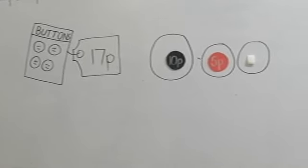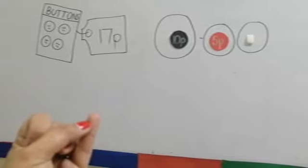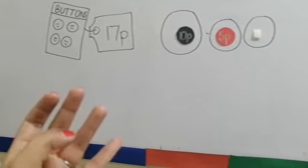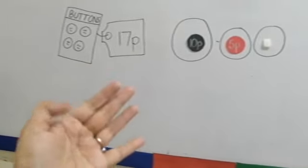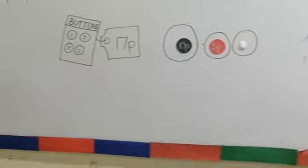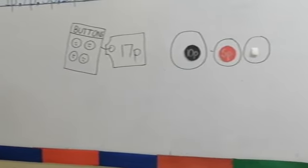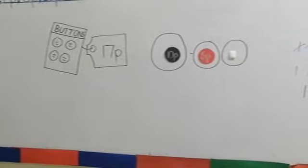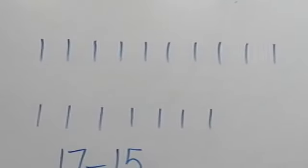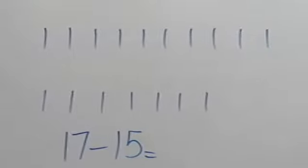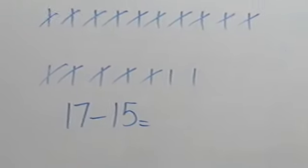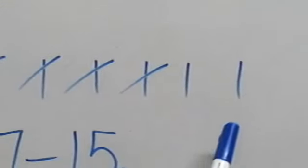10 is in our mind and 5 is on our fingers. Let's count: 10 ke aage 5 tak count karein — 11, 12, 13, 14, 15. So 10 plus 5 is equal to 15. But humein toh buttons ka pack purchase karne ke liye 17 paisas chahiye. So how many left? We draw 17 lines and cross 15. Only two lines are left.